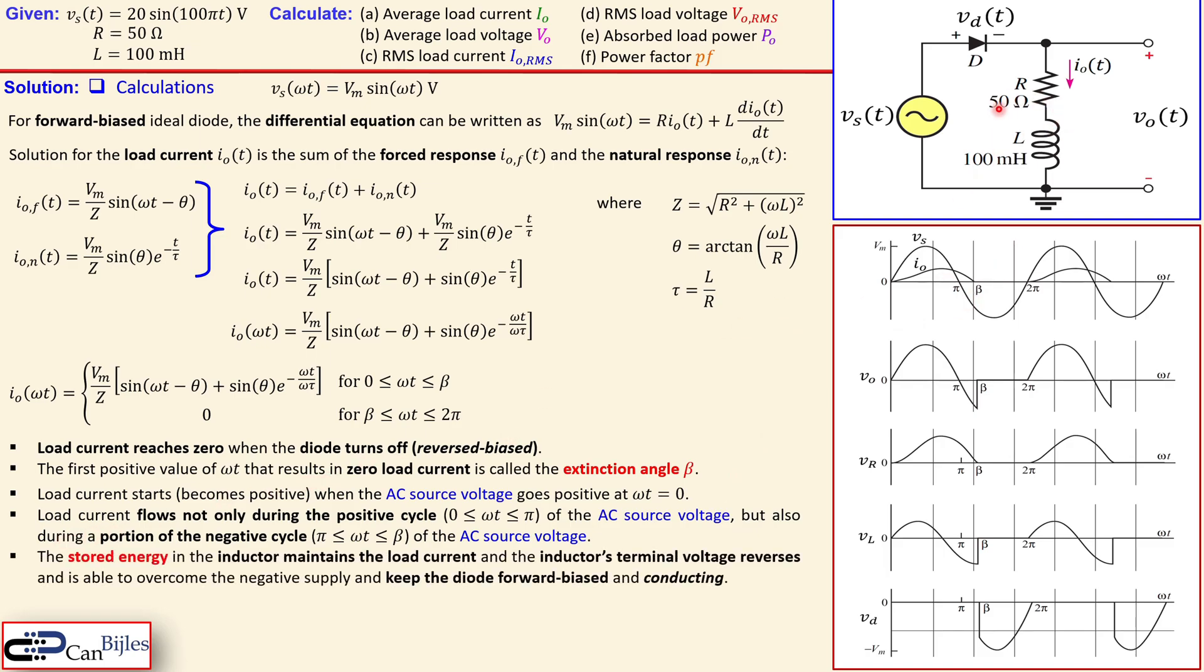That is because of this stored energy in the inductor. Because of the stored energy in the inductor, inductor maintains the load current and the inductor's terminal voltages reverses such that this current is still flowing in the same direction as initially. And it is able to overcome this negative supply voltage here and then keep that conducting of this complete circuit so the diode is still forward biased.